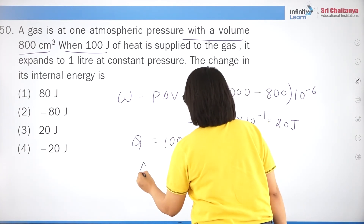Question 35: a given mass of gas expands from state A to B by three paths. Work done equals the area under the PV graph. Path 3 has the largest area, path 2 the next, and path 1 the smallest. Therefore W3 > W2 > W1, which is option 2.